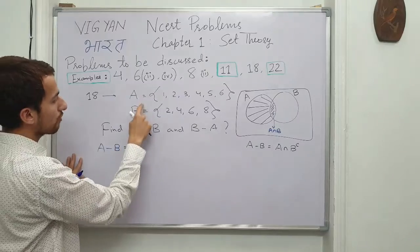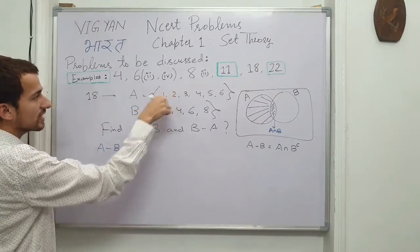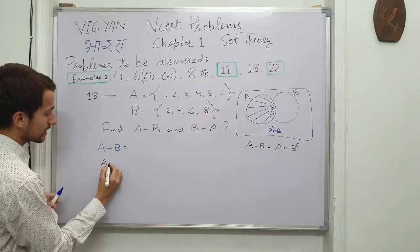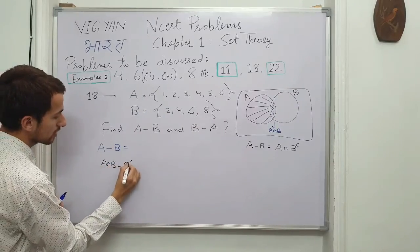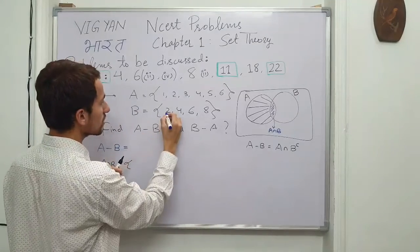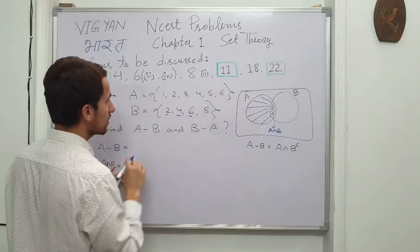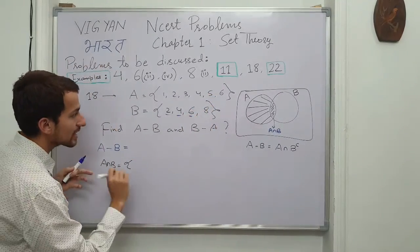So using the definition of set difference, we find, first we can try to calculate the intersection. A-intersection B is elements common to both. 2 is common, 4 is again there, and 6 is there. So what are the elements in the intersection? 2, 4, and 6.